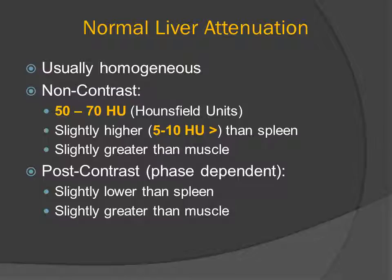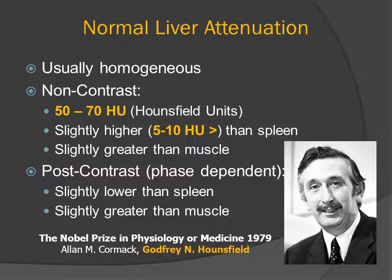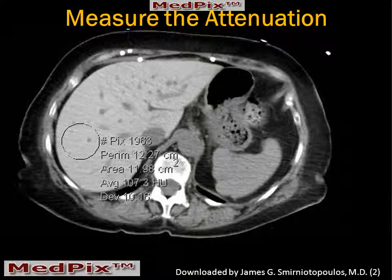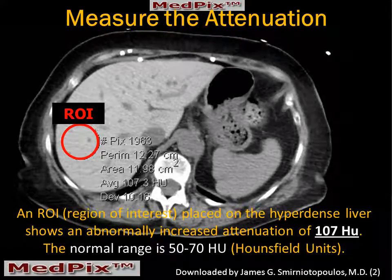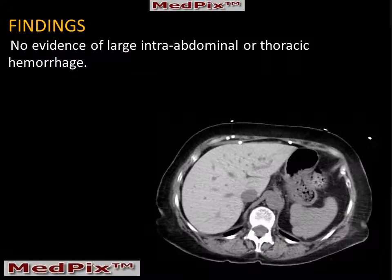How can we confirm this? The normal liver has 50 to 70 Hounsfield units, and it's typically 5 to 10 units higher than the attenuation of the spleen. These Hounsfield units are named after Sir Godfrey Hounsfield, who won the Nobel Prize in Physiology or Medicine in 1979 for his invention of the CT scanner along with Alan Cormack. If we actually measure the attenuation of the liver using an ROI, or region of interest, in our patient it's 107 Hounsfield units — and the normal range is only up to 70. So this patient's liver is way too high in attenuation.